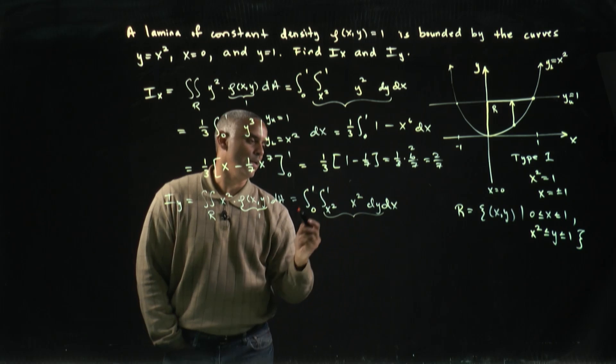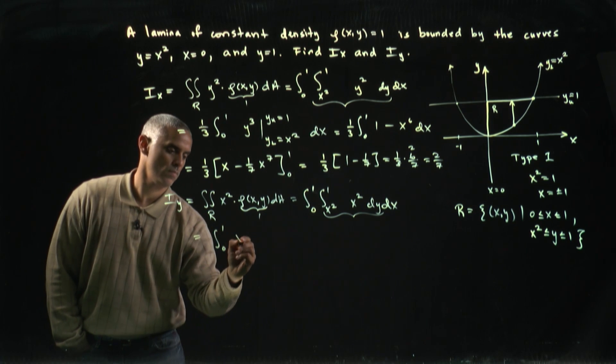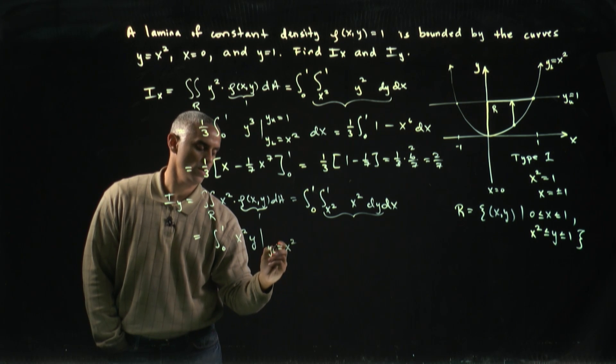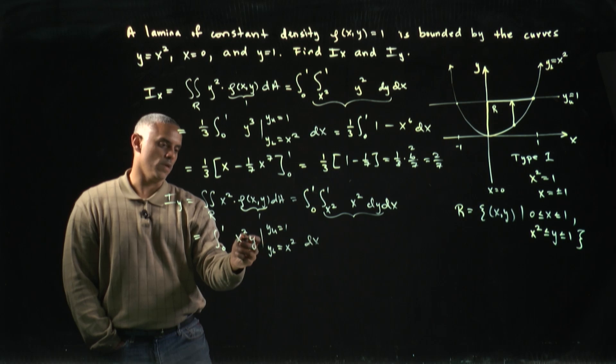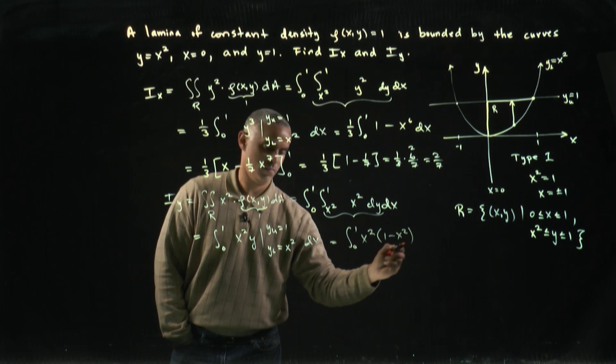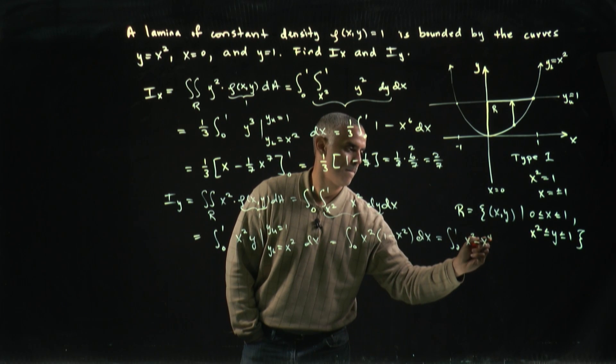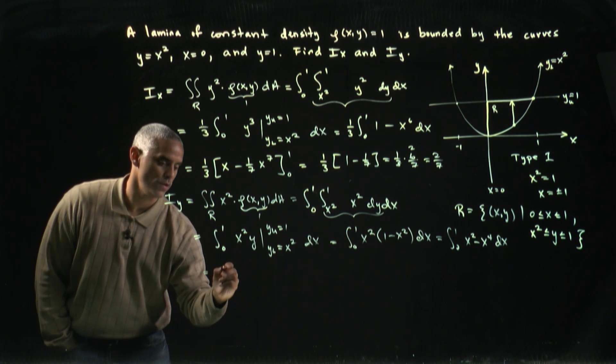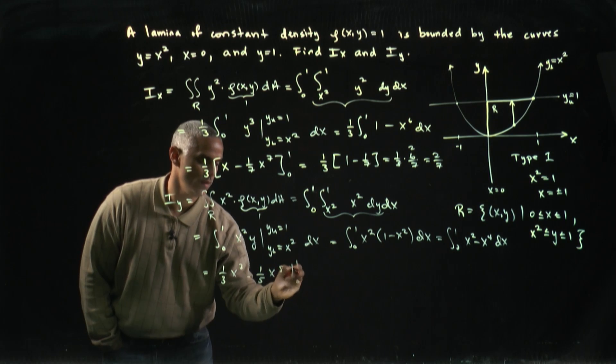On my iterated integral, I'm integrating with respect to y, it just becomes x squared y as y goes from x squared to 1, y lower equals x squared to y upper equals 1, and then we'll pass that to the dx. This should become x squared times 1 minus x squared dx, or the integral from 0 to 1 of x squared minus x to the 4th dx. And if we integrate that, we get a third x cubed minus one-fifth x to the 5 evaluated from 0 to 1.